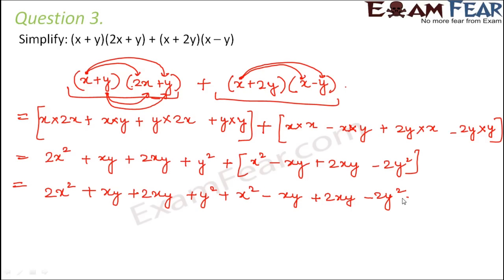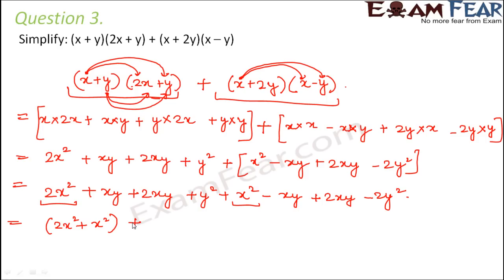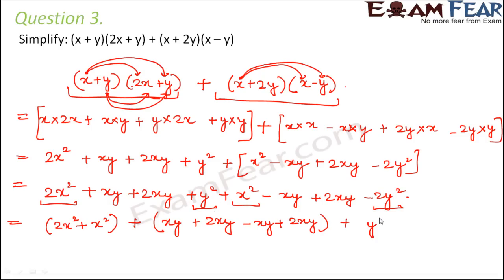So this is what we finally get. Now let us rearrange to get the like terms together. The terms with algebraic factor x squared: we have two such terms, so 2x squared plus x squared. For terms with algebraic factor xy, there are four such terms: xy plus 2xy minus xy plus 2xy. And for terms with algebraic factor y squared, we have plus y squared minus 2y squared. So 2 plus 1 is 3x squared.